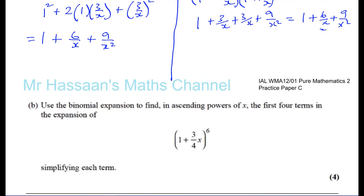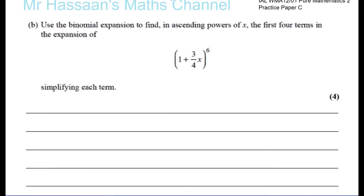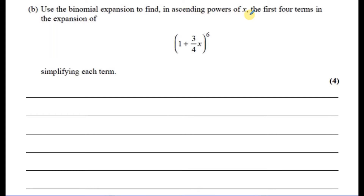Now for Part B: use the binomial expansion to find, in ascending powers of x, the first four terms in the expansion. The binomial expansion can be done in different ways. I prefer the general method which works for whole number, fractional, and negative powers. The nCr method — the traditional approach — won't work for fractional and negative powers, which becomes a problem at P4 in A2 maths.